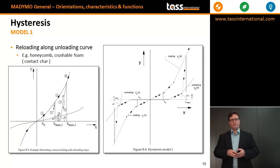In model 1, the user can model honeycomb and crushable foam-like materials, where materials react through a loading phase, an elastic unloading along the hysteresis slope, and an unloading along the unloading curve. But where reloading occurs along the unloading, and then back along the hysteresis slope, until the loading curve is again reached.